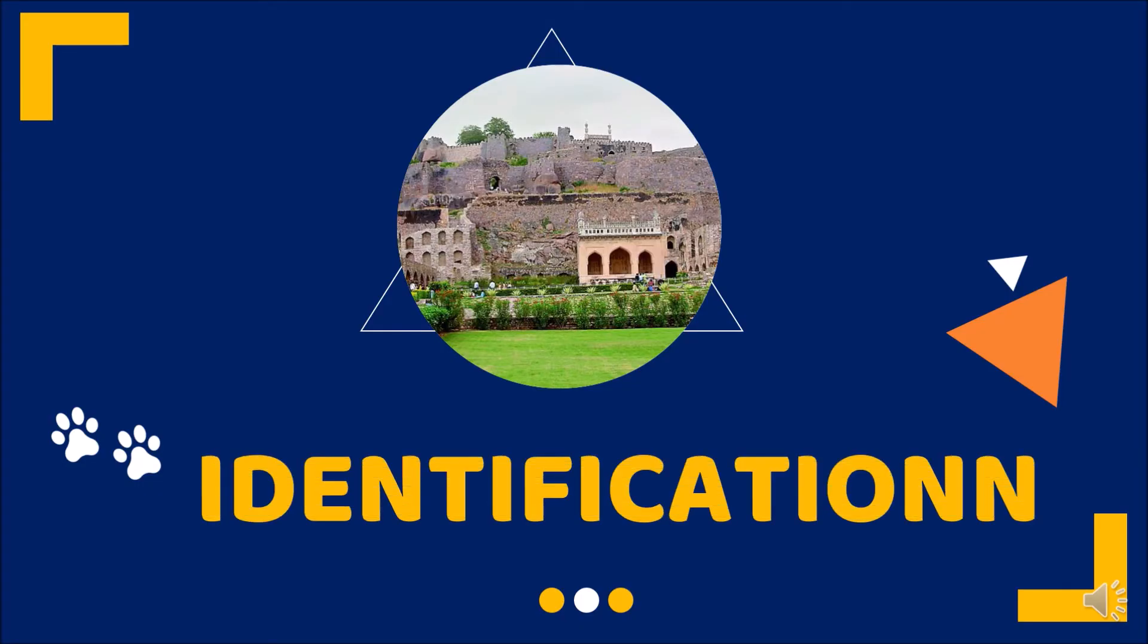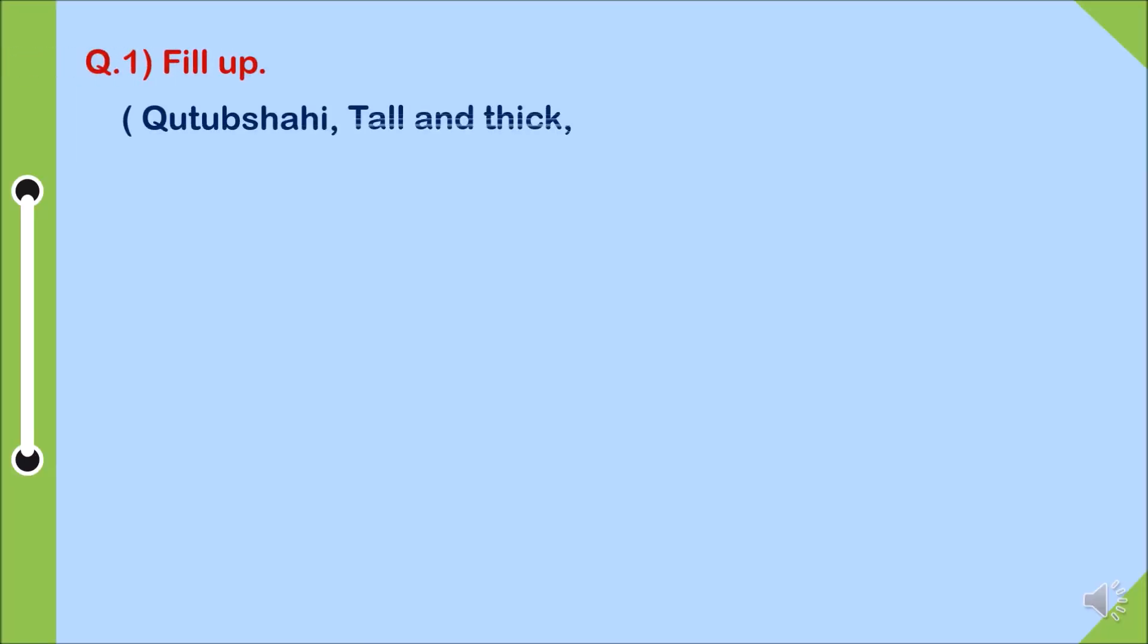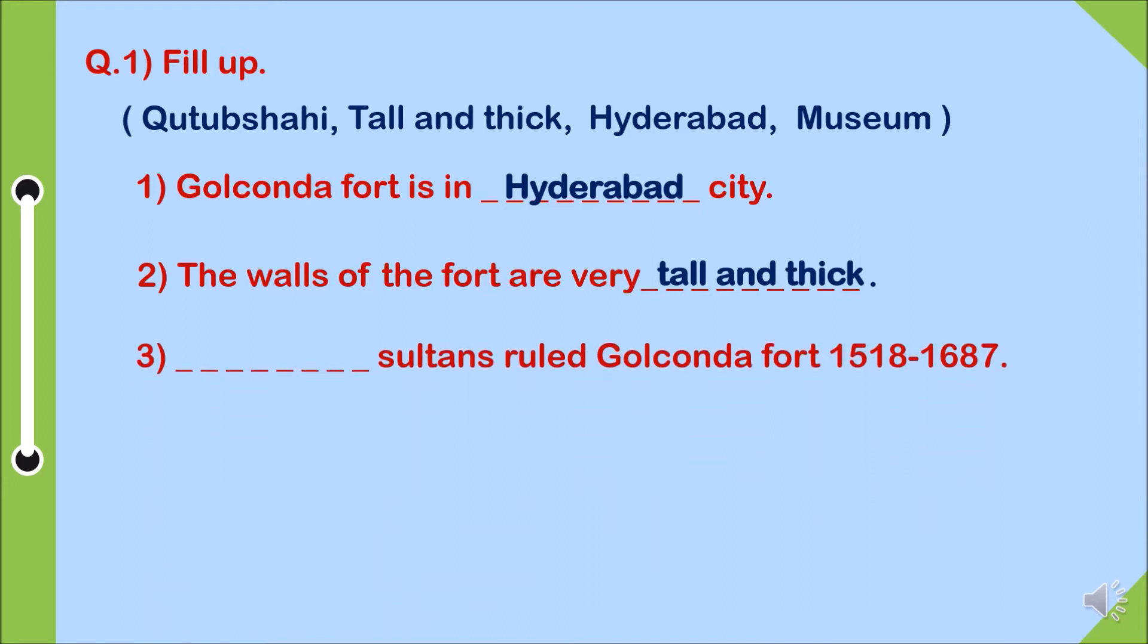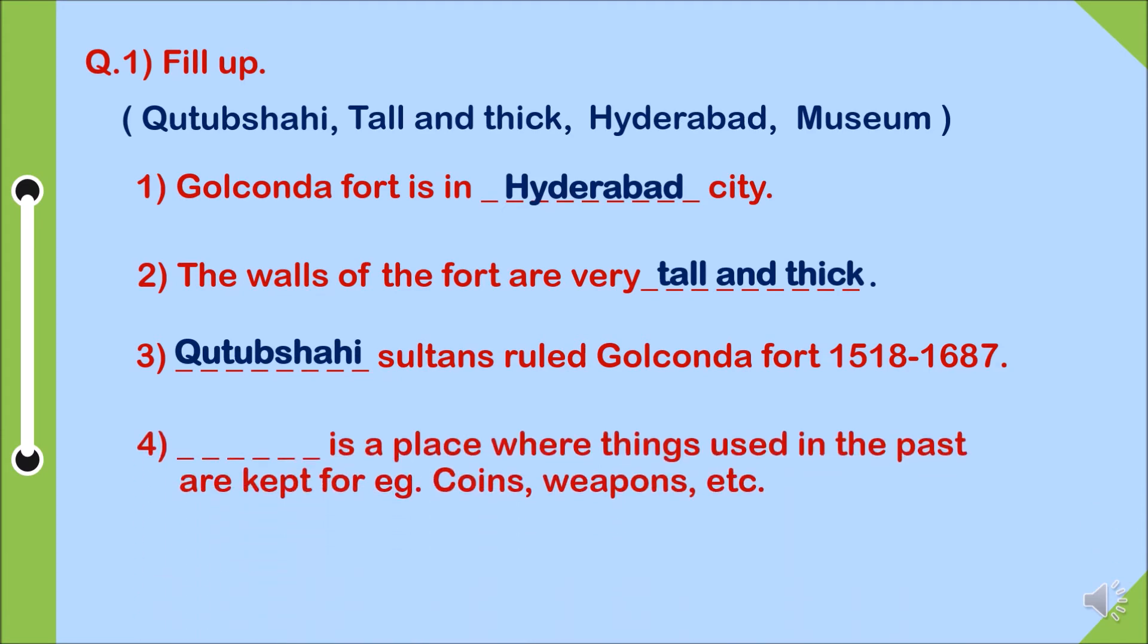Now identification. Question one, fill up. Here are options: Qutub Shahi, tall and thick, Hyderabad, and museum. One, Golconda Fort is in Hyderabad city. Two, the walls of the fort are very tall and thick. Three, Qutub Shahi sultans ruled Golconda Fort from 1518 to 1687. Four, museum is a place where things used in the past are kept, like coins and weapons.